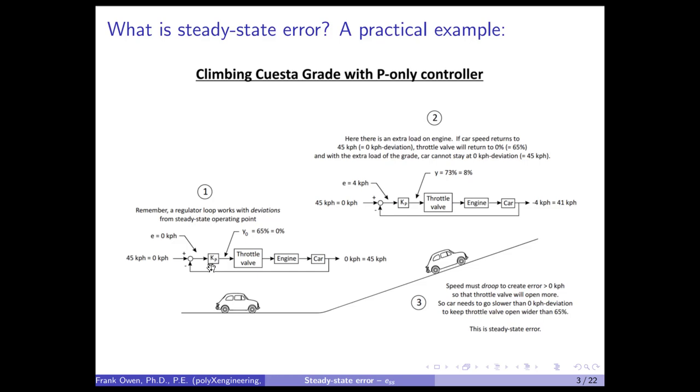So what will happen is, if I start going up the grade and the throttle valve returns to 65%, the car will not go 45 kilometers per hour. It will slow down because the throttle valve is not high enough to keep the car going at 45 kilometers per hour. It was on the flat, but it's not when you're going up the grade.